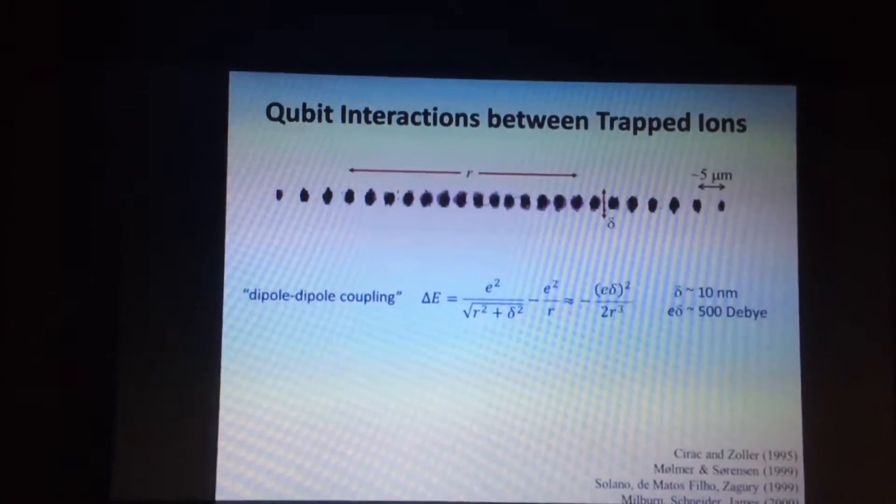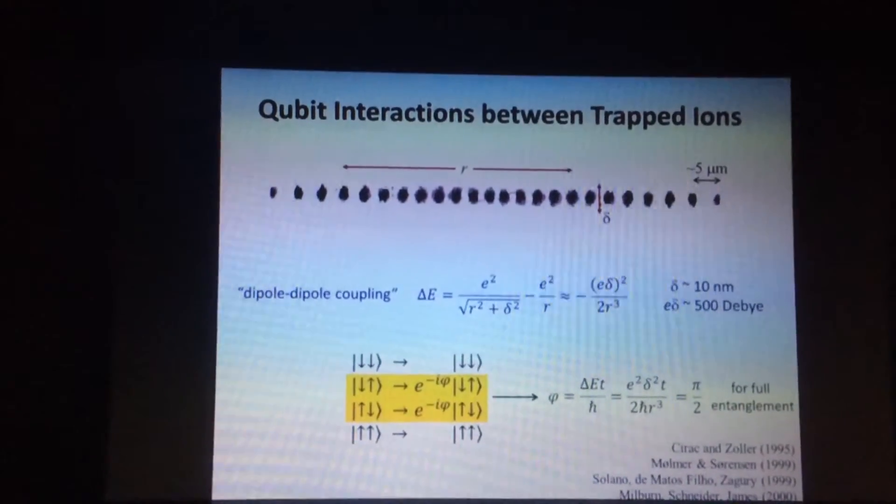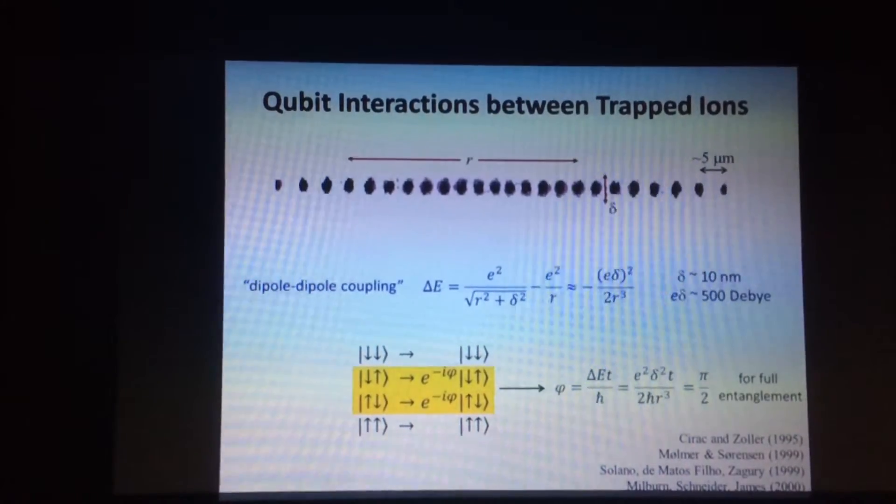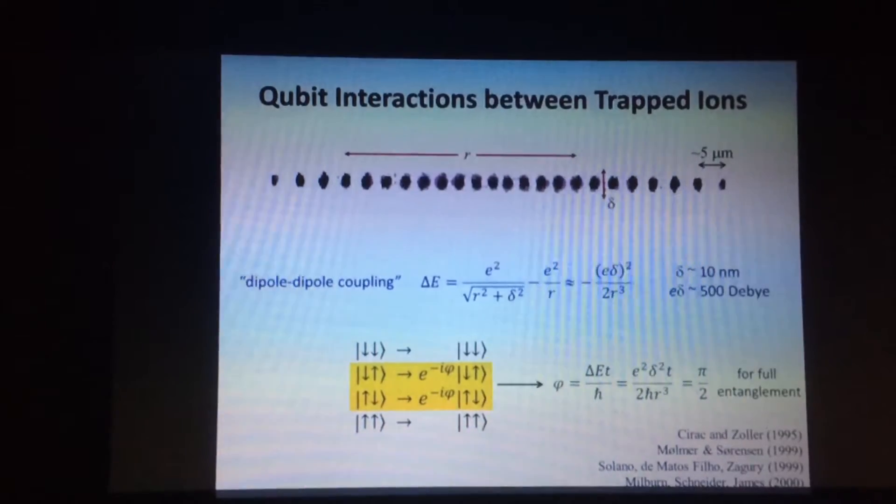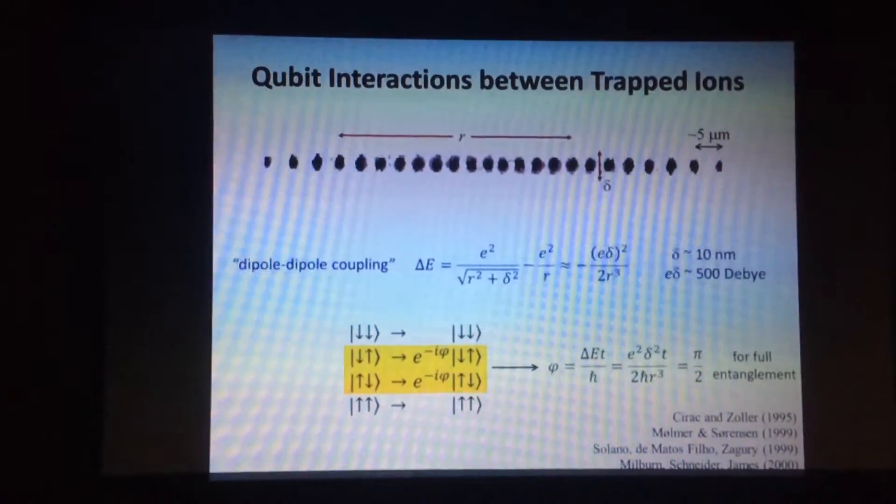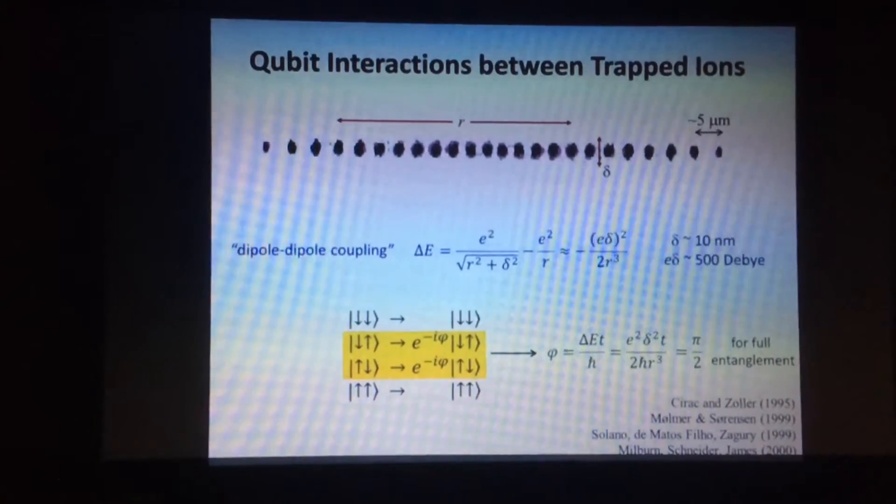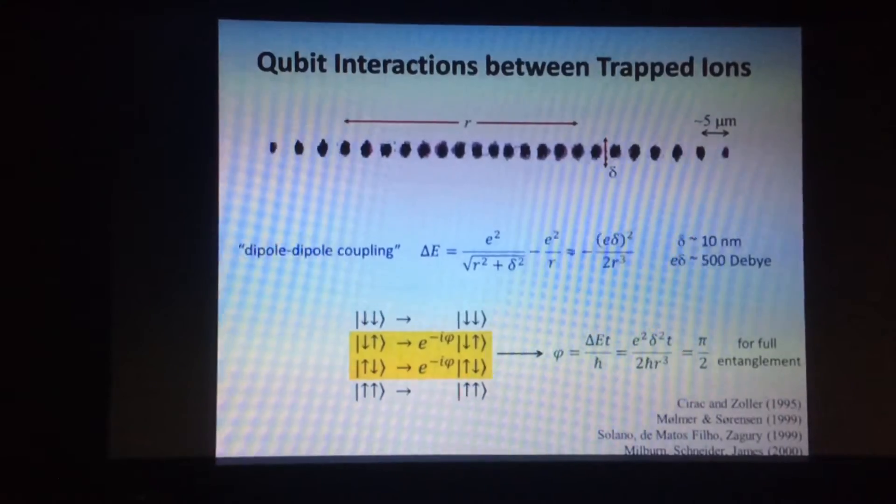And this is exactly what we use to do gates. Why is this a gate? Well, if you look at the four configurations of those two spins, again, only the two mixed states suffer this energy change. And in fact, it's the same energy change. So in quantum mechanics, we add this phase factor. The energy decreased a little bit for a certain amount of time. So that determines this phase factor.